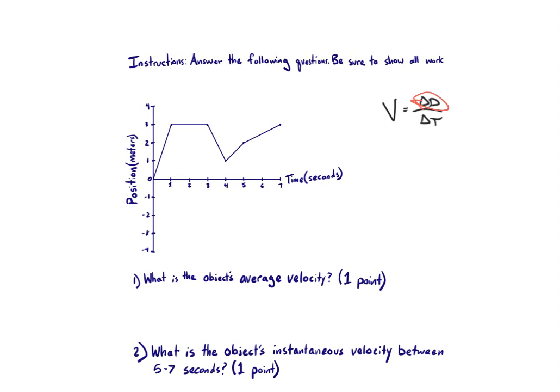Displacement is the idea of how far something has changed from its origin. When we say origin, we're talking about a home base — where the object started. If we were talking about how far you move in a day, your origin may be your bed. In a foot race, the origin would be the starting line. It's really how far the object has moved away from its starting location, and the change in time is how long it took to get there. For velocity, we need two pieces of information: the change in displacement and the change in time.